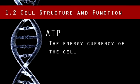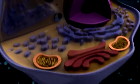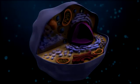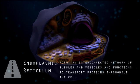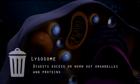The energy currency of the cell is ATP. The ribosomes act as factories which translate the genetic information, or DNA, from the nucleus into usable protein molecules. Proteins do the work in the cell. The Golgi functions as the post office in the cell and packages and modifies the proteins. The endoplasmic reticulum is the highway of the cell — it forms an interconnected network of tubules and vesicles and transports proteins throughout the cell. Many of the protein-producing ribosomes are located on the endoplasmic reticulum. The lysosome is the trash man of the cell because it digests excess or worn-out organelles and proteins by breaking them down and removing them.